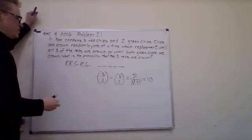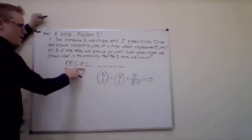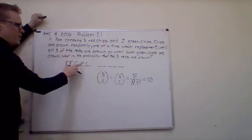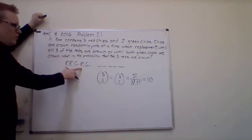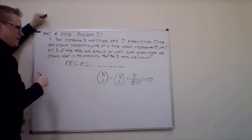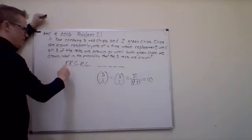What we want to do is understand what do all the ways, of the ten ways, what do all the ways in which the reds get drawn out first have in common? And I don't want to answer right away. I want you to think about it. They're all going to have a certain feature. Let's list a couple more out to see.